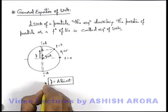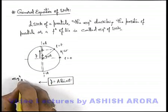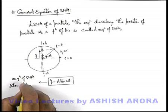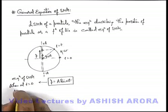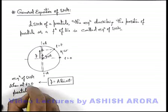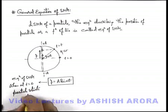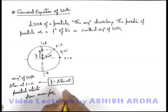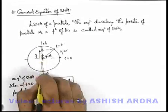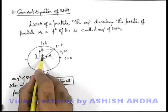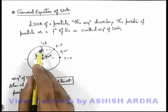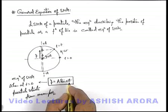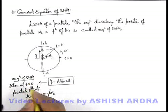So we can state this is the equation of SHM when at t equal to zero the particle starts from mean position. As we have just studied, at t equal to zero the particle which is executing SHM was at mean position, so its displacement as a function of time can be given as y equals A sine omega t. This can be regarded as the equation of SHM.